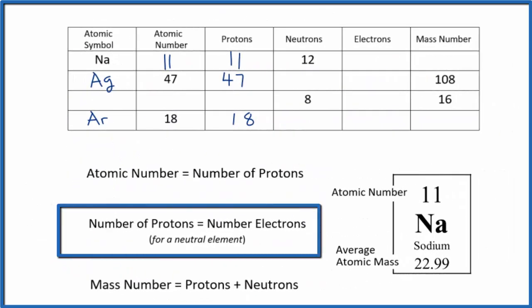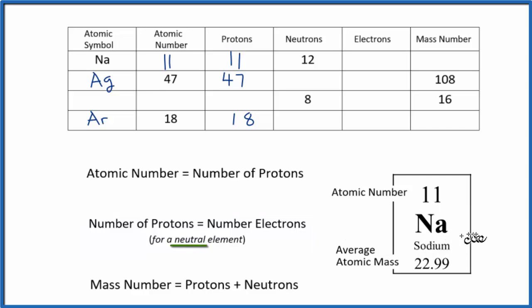On to rule 2: the number of protons equals the number of electrons for a neutral element. All the elements listed on the periodic table are neutral. If they weren't neutral, they'd have a plus or a minus sign — they'd be an ion. But everything on the periodic table with nothing written after it is neutral.